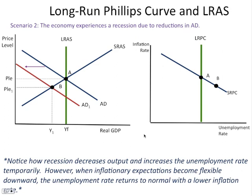Two things can bring us out of this recession: policymakers can step in, or the economy can self-correct. Assuming it self-corrects: eventually people will accept lower inflationary conditions and be willing to accept lower wages as their expectation of inflation adjusts downward. Input costs also fall — for example, wheat costs are cheaper, so a pizza place can buy more dough, hire more workers, and make more pizza. The short run aggregate supply curve will shift to the right, bringing the economy back to long run equilibrium at lower price levels.